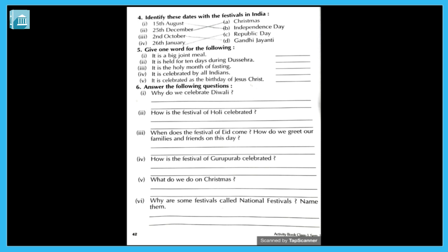Second one: how is the festival of Holi celebrated? Holi hum kaisa celebrate karte hain? Answer: the festival of Holi is celebrated with lots of colors and flower petals — bahut saare colors se khelte hain aur flower petals hoti hain, us se khelte hain, aisa celebrate karte hain.